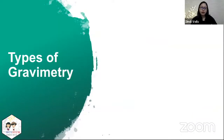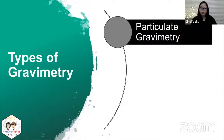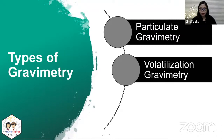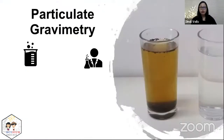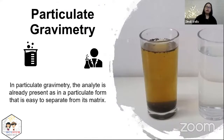There are three types of gravimetry: the first one is particulate gravimetry, the second is volatilization gravimetry, and the third one is precipitation gravimetry.